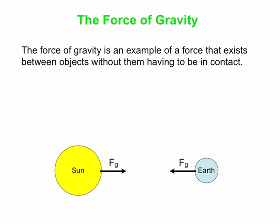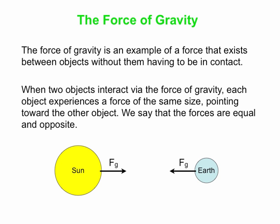Here are the free body diagrams of the Sun and the Earth in that system. The Sun exerts a force on the Earth — that's the Fg attached to the Earth in this picture. A free body diagram shows all the forces that are exerted on an object by other things. And the Fg attached to the Sun is the force that the Earth exerts on the Sun. Note that those are equal and opposite forces. Gravity is always an attractive force; these forces always go back toward the object that's exerting the force.